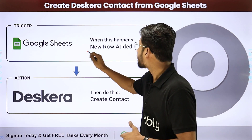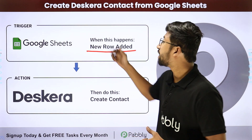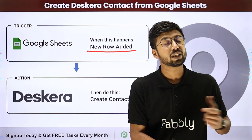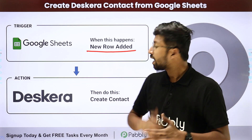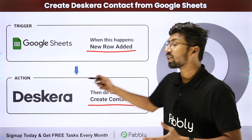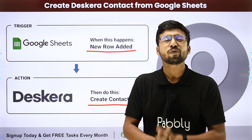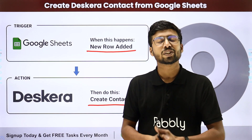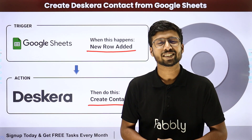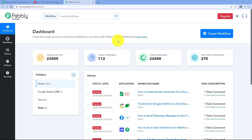You can actually automate this process. In this automation, when we add a new row of data in our Google Sheet with the user details, automatically with the same details we are going to create a contact for that user in Deskera. To set up this automation, come with me to my screen. We are on Pabbly Connect's dashboard, and you will get a free sign-up link in the description box below.